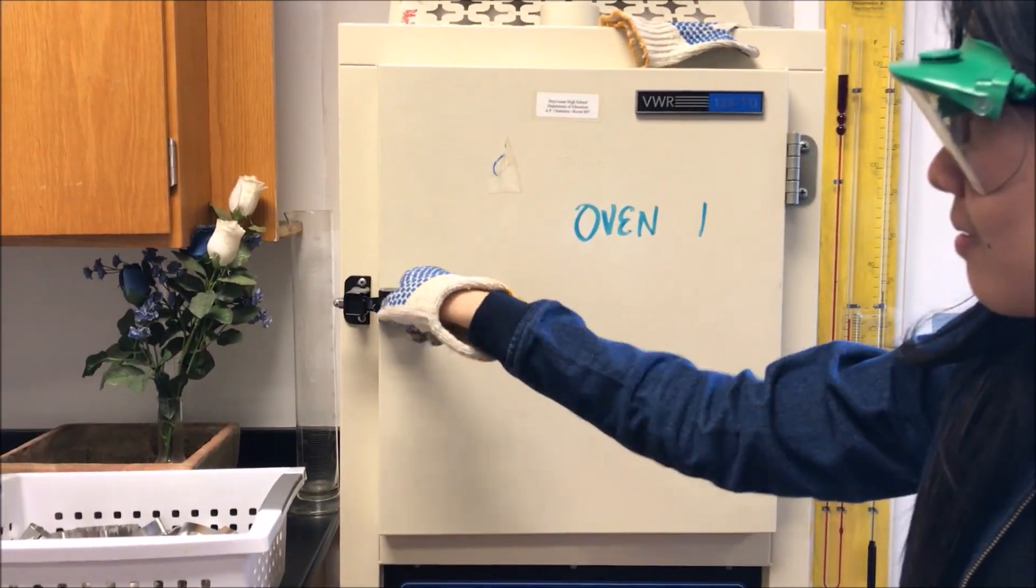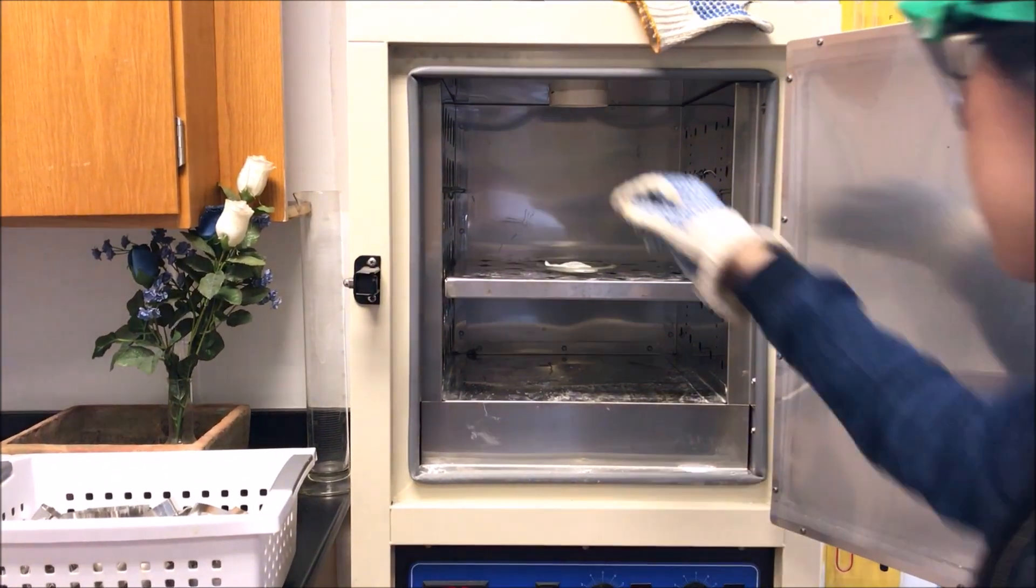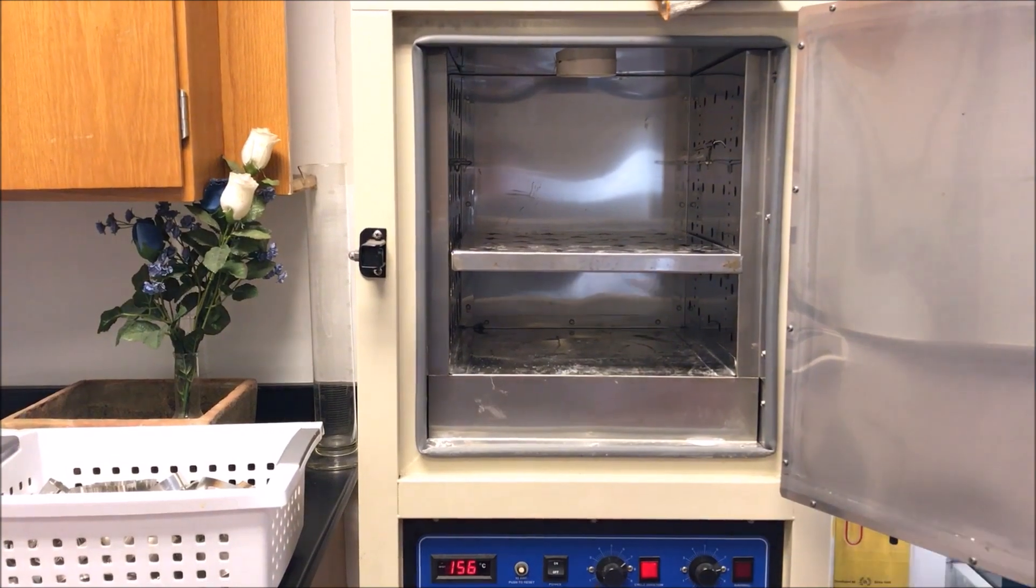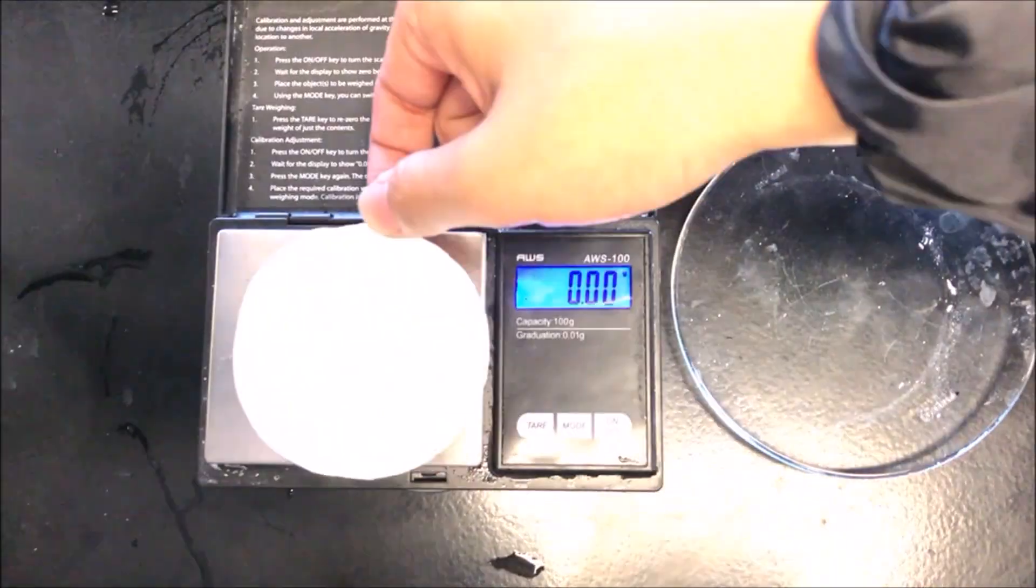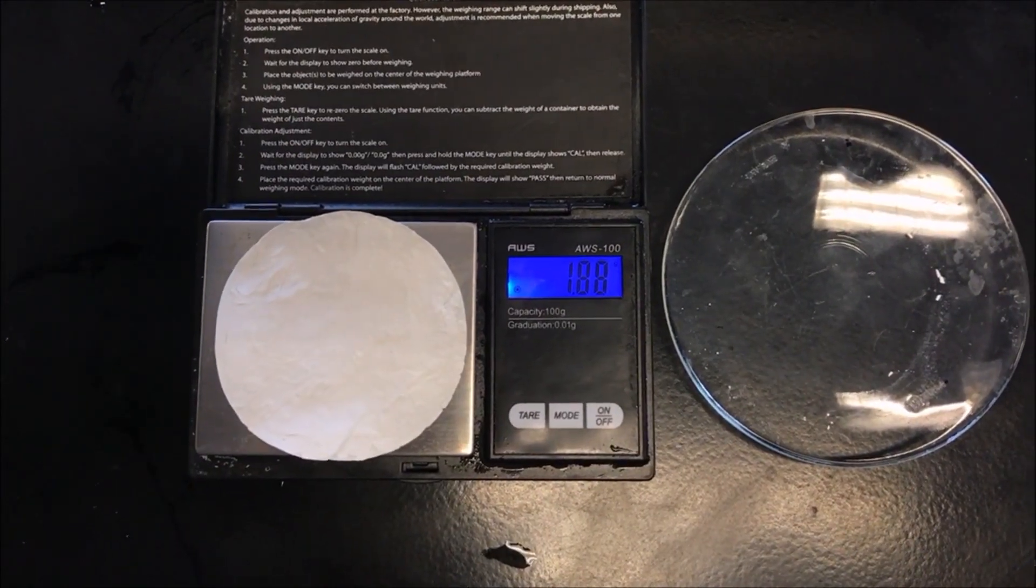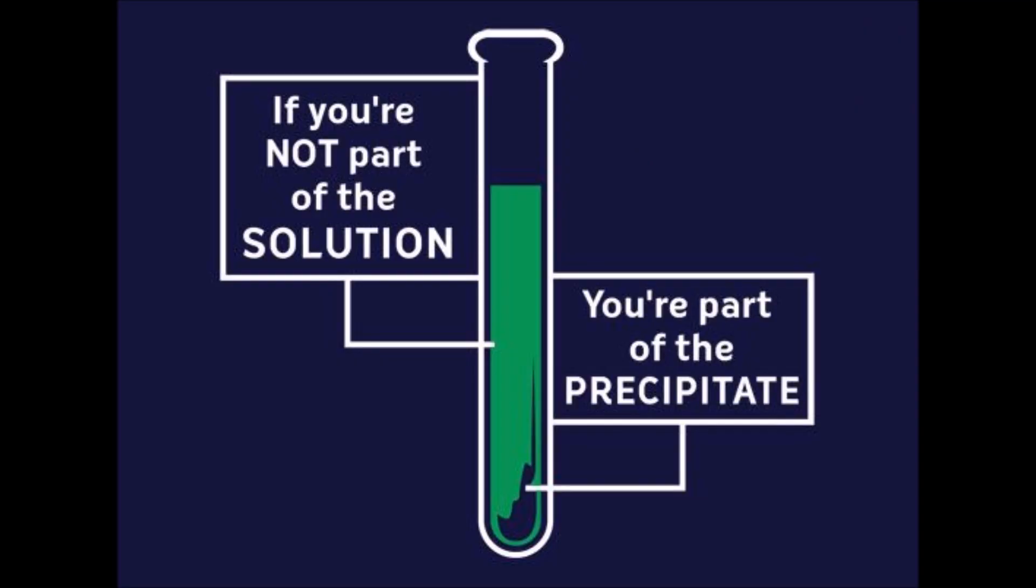Remember to put on gloves before reaching into the oven. Take out your dry precipitate and filter paper. Be sure to close the oven. Weigh out your dry precipitate and filter paper and throw in the trash. After completing the two trials, clean all your glassware. Start part 2.